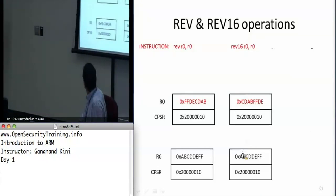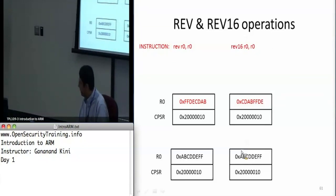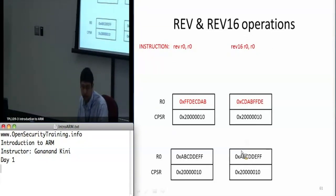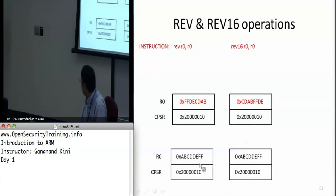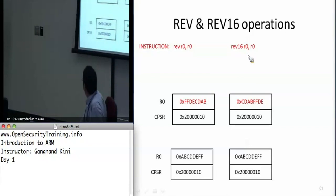Here's an example: if you use REV R0, R0, and R0 is filled with bytes 0xAB, 0xCD, 0xDE, 0xFF, then REV produces 0xFF, 0xDE, 0xCD, 0xAB — basically the reverse byte order stored back into R0.